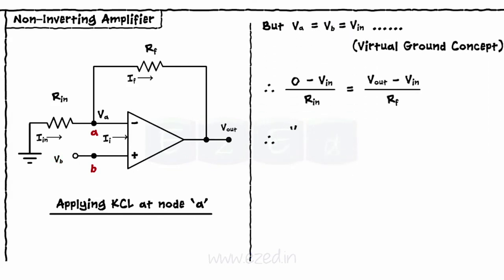Therefore, v-out upon r-f minus v-in upon r-f minus v-in upon r-in equals 0.